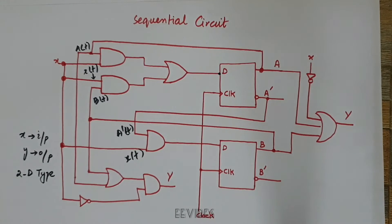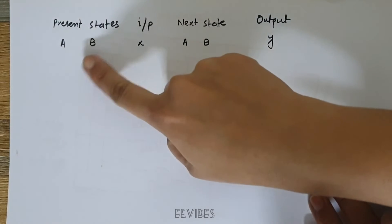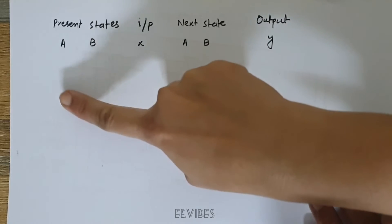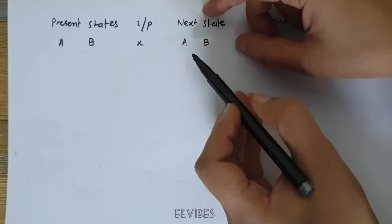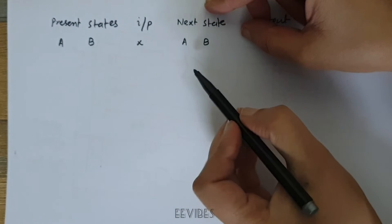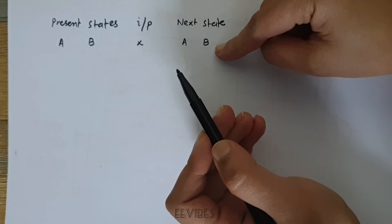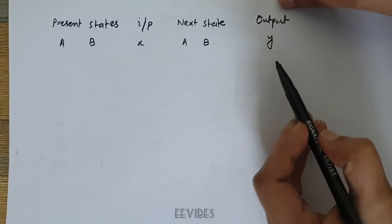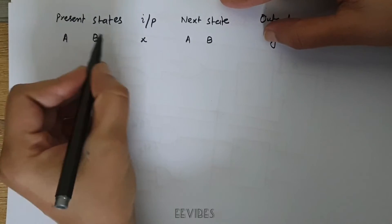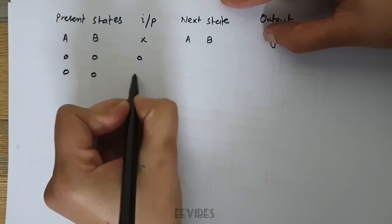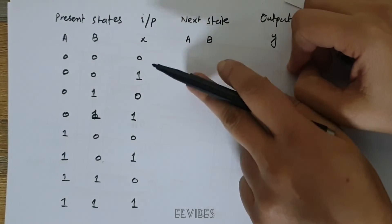The entries present in the state table are: the present state — since two flip-flops are present, A and B represent their present state values; the input X; then the predicted next state values of the flip-flops, which depend on the D input; and finally the output Boolean function Y. Since three variables are here, we use 3-bit binary combinations, giving 8 rows in the state table.